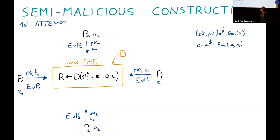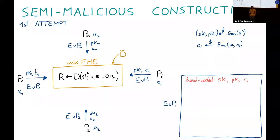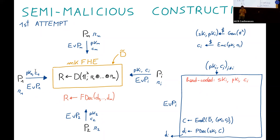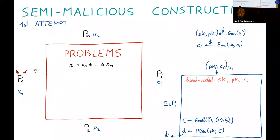Each party P_i now sends an obfuscated program called the evaluation program along with its public key and ciphertext. This obfuscated program contains the secret key of party P_i hardcoded. It takes as inputs all the ciphertexts, evaluates the distribution homomorphically on the inputs, and finally performs the partial decryption using the hardcoded secret key. Using the evaluation programs, the parties are able to obtain all the partial decryptions in one round, so they can run the final decryption algorithm and retrieve the output. The solution is correct and works in one round, but the answer to whether it is secure is no. There are two problems.